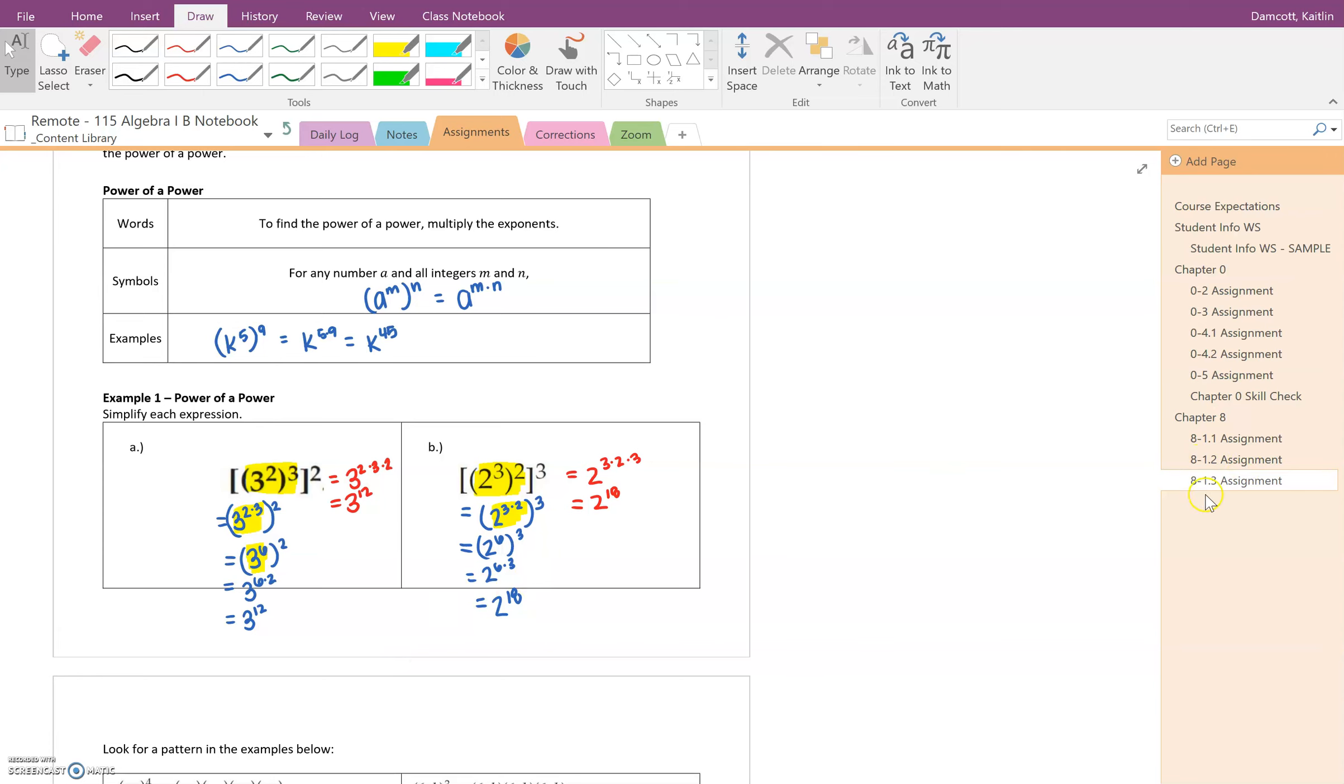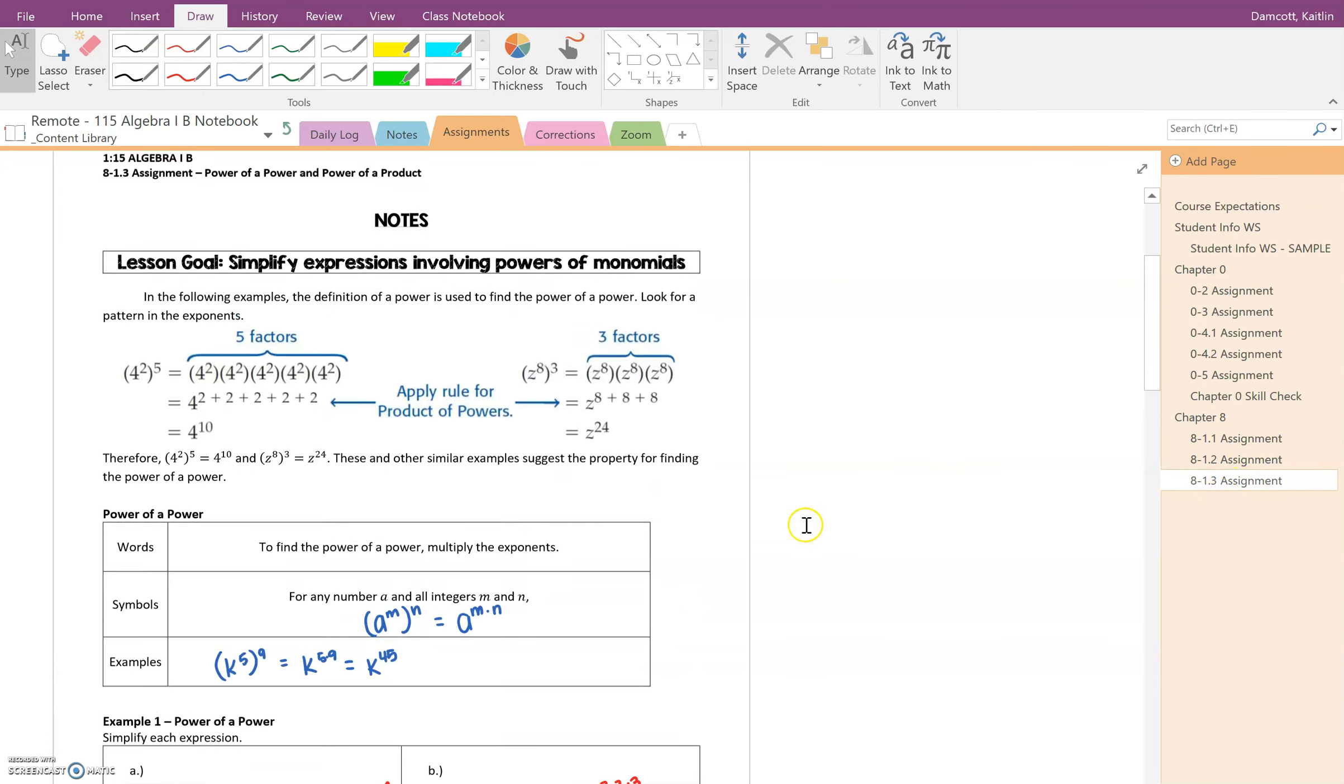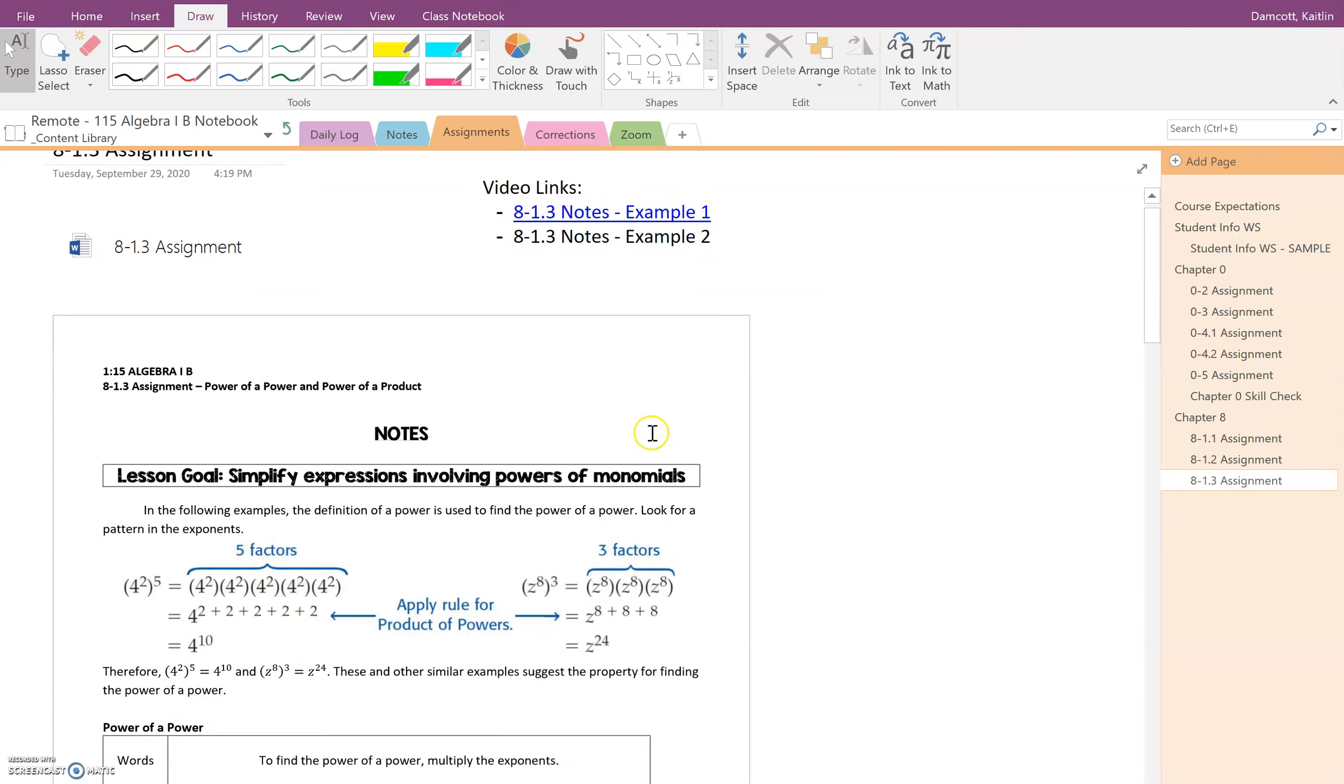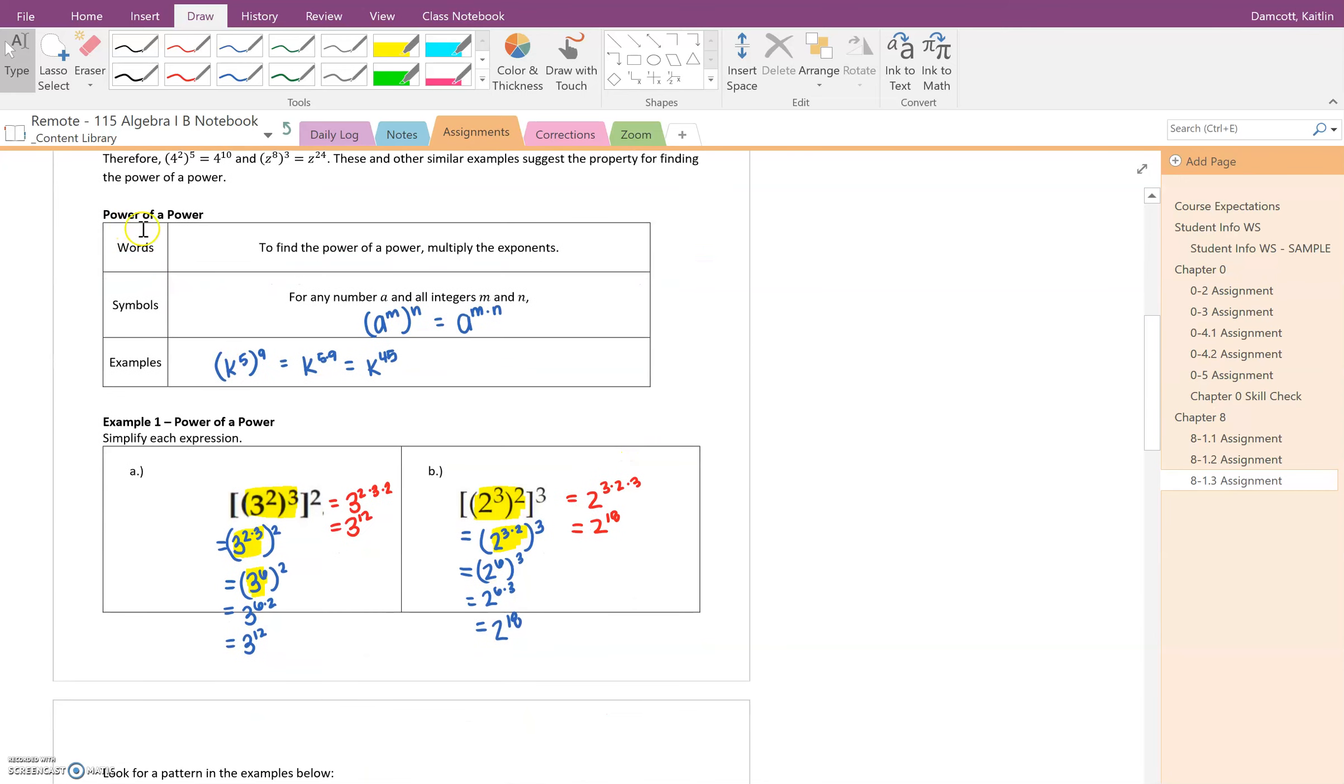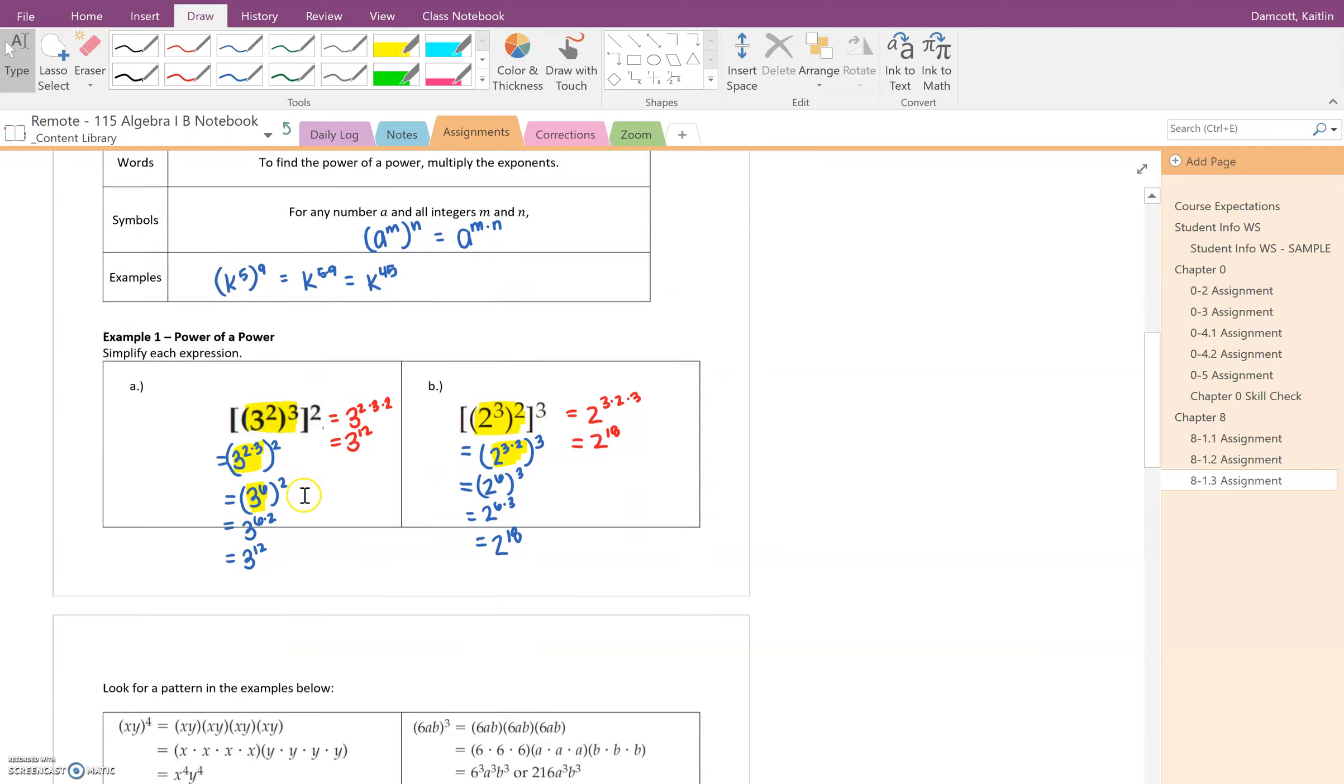Alright, welcome back to the 8-1.3 assignment. We just finished going over example 1 where we were looking at a power of a power, and we determined that you keep your base and multiply your exponents. So this is when you're raising a power to a power.